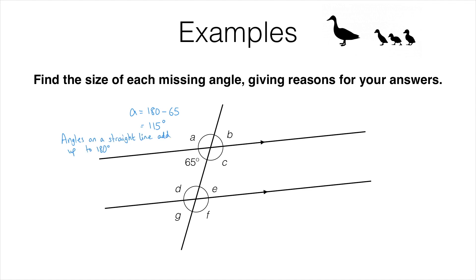Next we need to work out what B is. As we said at the beginning of the video, this is vertically opposite the marked 65 degree angle, so these two need to be the same. This also fits in with our understanding of angles on a straight line — these two angles are on a straight line so they should add up to 180 degrees, and 115 plus 65 is 180 degrees as we need.